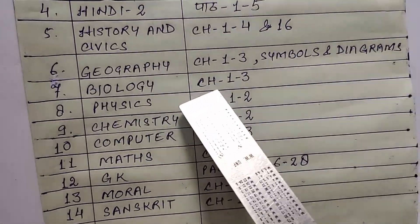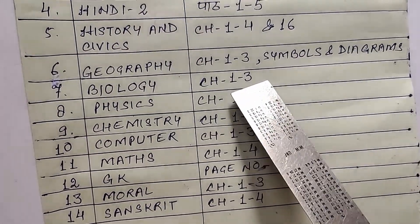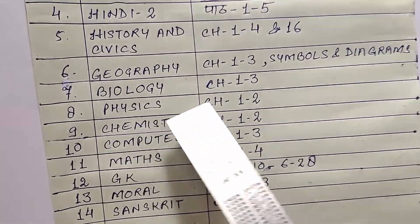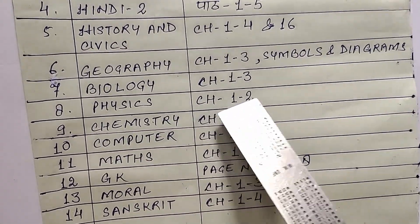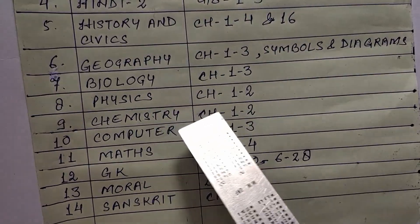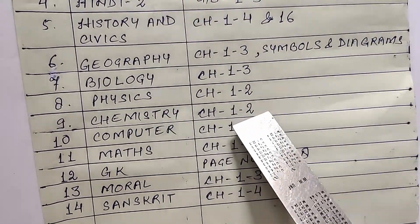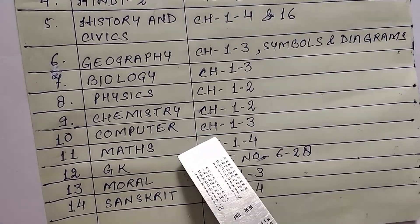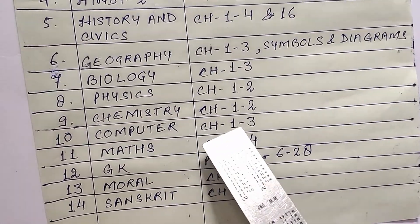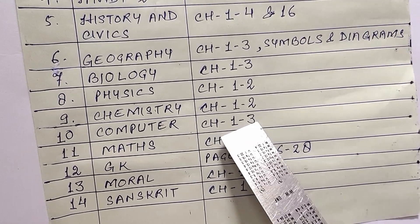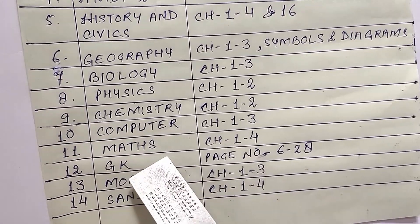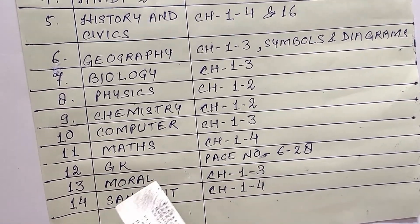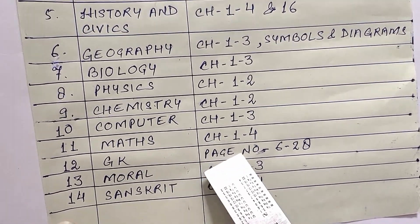Biology: Chapters 1-3. Physics: Chapters 1 and 2. Chemistry: Chapters 1 and 2. Computer: Chapters 1, 2, 3. Maths: Chapters 1-4.